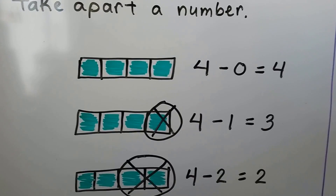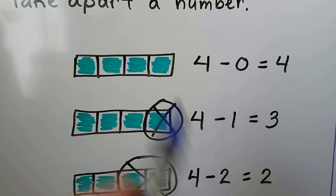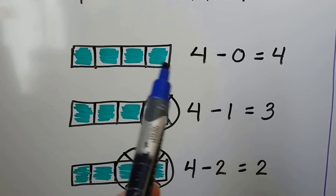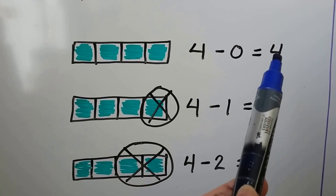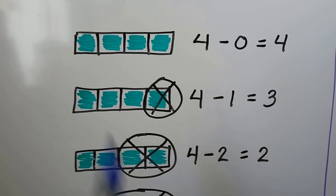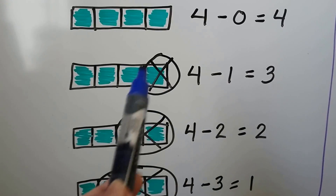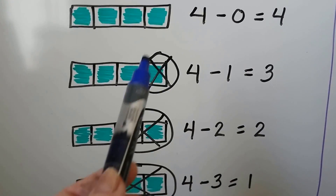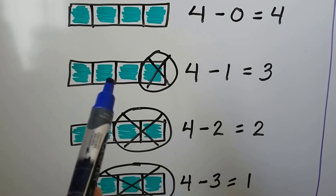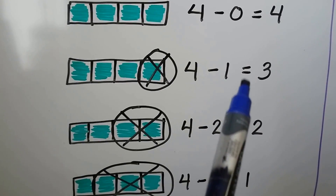We have four in this bar: one, two, three, four. If we take zero away, it's going to stay the same — we still have four in the bar. If we take one away, we circle the one that we're taking away and we cross it out. We can see how many are left: one, two, three. Four minus one is equal to three.